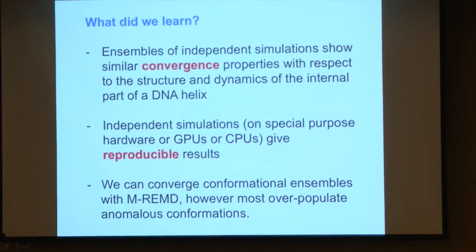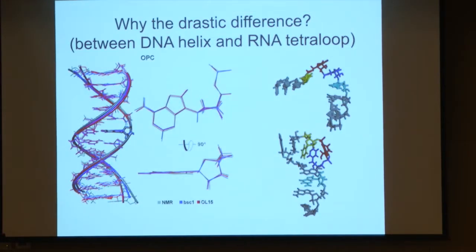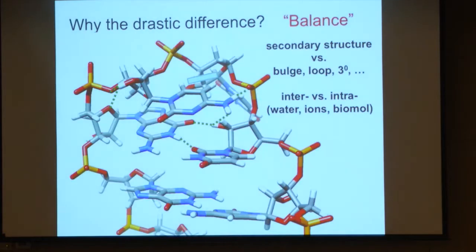What we've learned: ensembles of independent simulations or proper enhanced sampling simulations can converge. Differences between running independent simulations, long Anton simulations, and running replica exchange don't affect the results — we converge these ensembles very well. However, they mostly overpopulate anomalous conformations. DNA is great; RNA with non-duplex structure is problematic. The reason has to do with balance: in a DNA duplex, if your hydrogen bonding or stacking is slightly off, it doesn't matter much because there's no alternative structure to fall into.